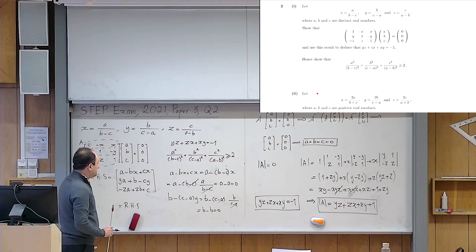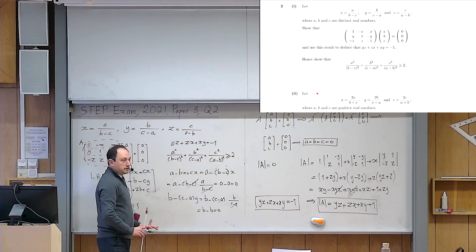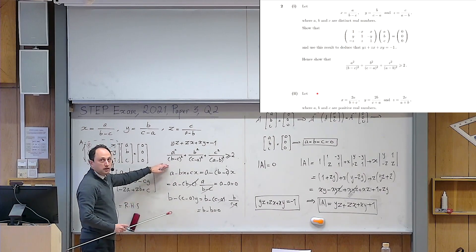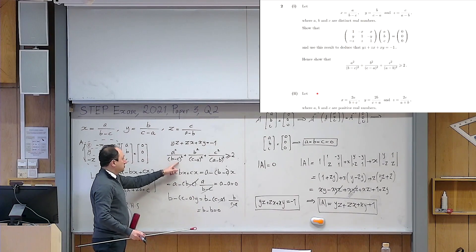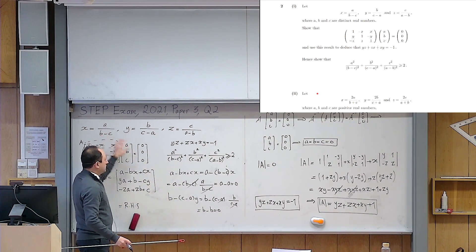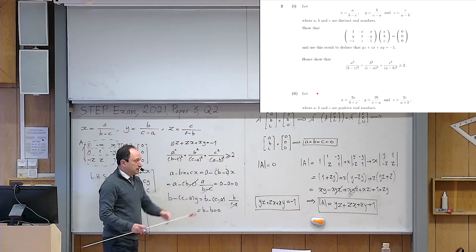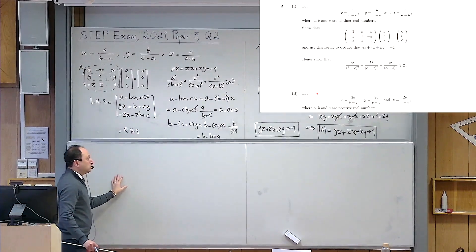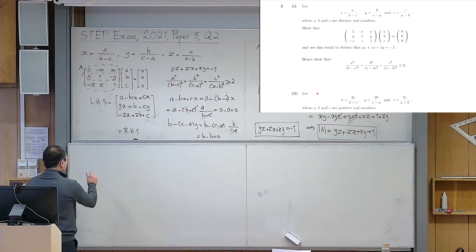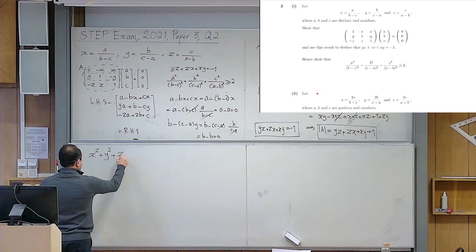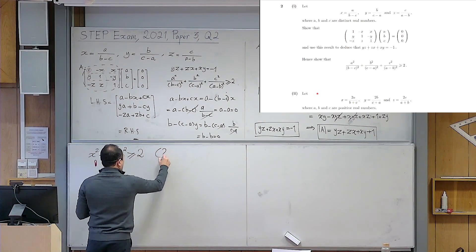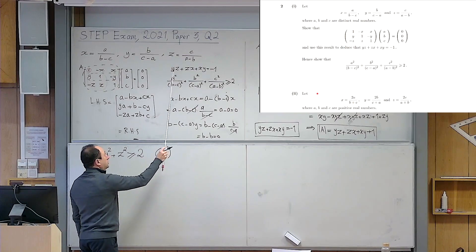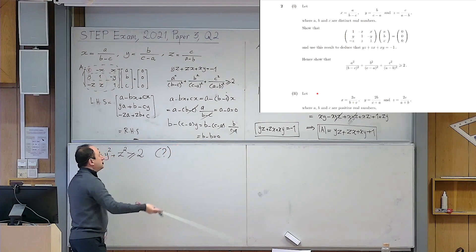Now we use these ideas to prove the inequality. It's easy to see how it reads in terms of x, y, z: a²/(b minus c)² is x², b²/(c minus a)² is y², and c²/(a minus b)² is z². So my goal is to show that x² plus y² plus z² is greater than or equal to 2.